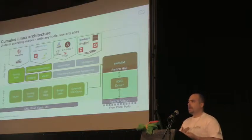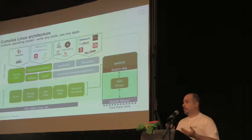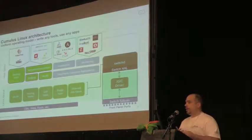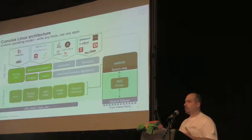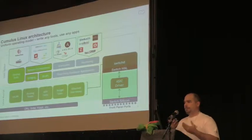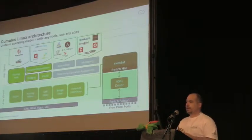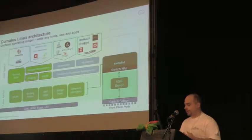It's based on Debian and Jesse. While running a network operating system on Linux isn't very new, what we specifically do is that we use all the functionality in the Linux kernel itself. We added a switching daemon that pushes all the routing and switching information into the ASIC, and that is what basically makes the difference.